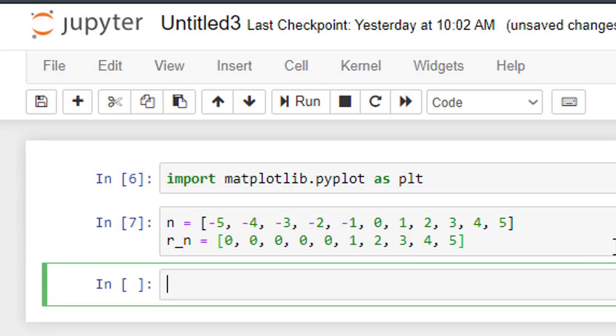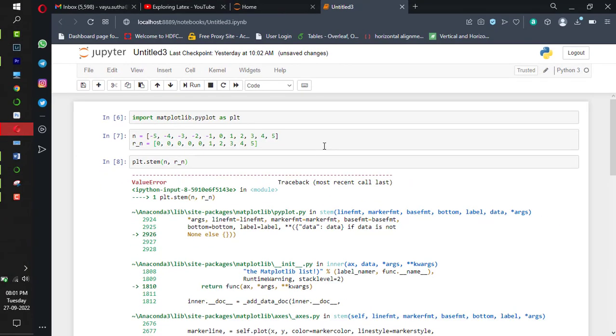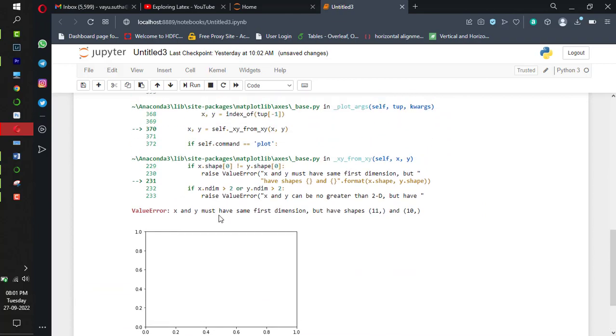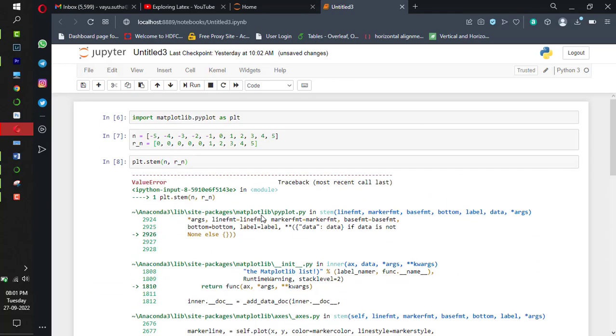Now we shall plot it. plt.stem - stem is to plot discrete time sequence. First argument is x-axis, which is independent variable n, and the second argument is y-axis, which is dependent variable r_n. Now if I go ahead and run it, I am getting an error saying that x and y must be of the same dimension.